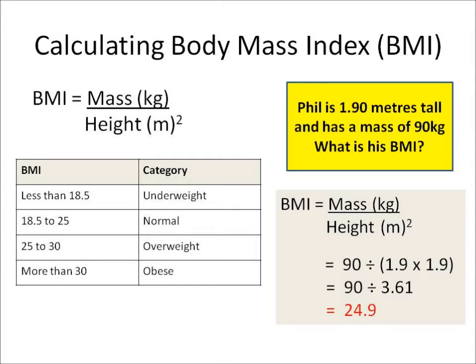First of all I write down the equation: BMI equals mass divided by height squared. Then I put in the numbers — his mass is 90, and I divide that by his height squared, 1.9 times 1.9. Now I need to do the sums in the right order.